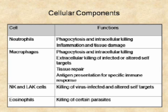The cellular components we want to concentrate on include neutrophils, whose primary job is phagocytosis and killing any bacteria they ingest. Neutrophils also contribute to inflammatory reactions and tissue damage, because the products they produce can actually cause tissue damage.